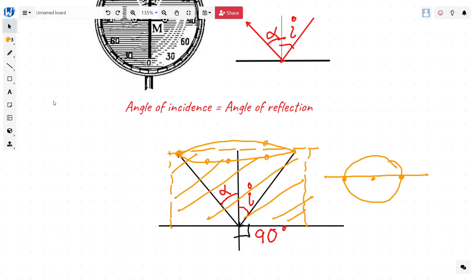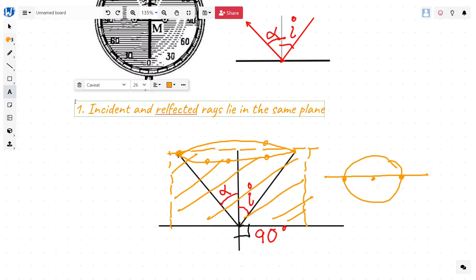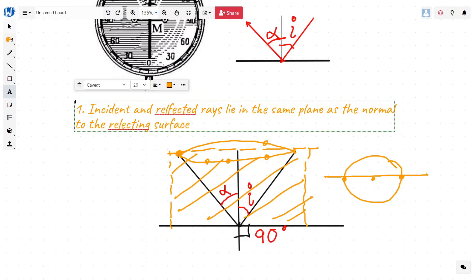So, we can write the modified and a better version of law of reflection like this. Incident and reflected rays lie in the same plane as the normal through the reflecting surface at the point of incidence.